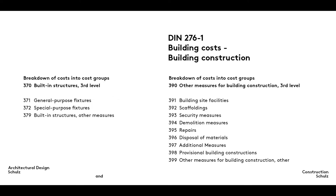There are also other elements that do not fall into any of the categories we've seen up to now. They are neither foundations, vertical or horizontal elements, or roofs. Cost Group 370, for example, deals with so-called built-in structures. Cost Group 390 describes all the other construction-related activities that may be required to erect a building. As usual, these two groups are further divided into Level 3 groups.